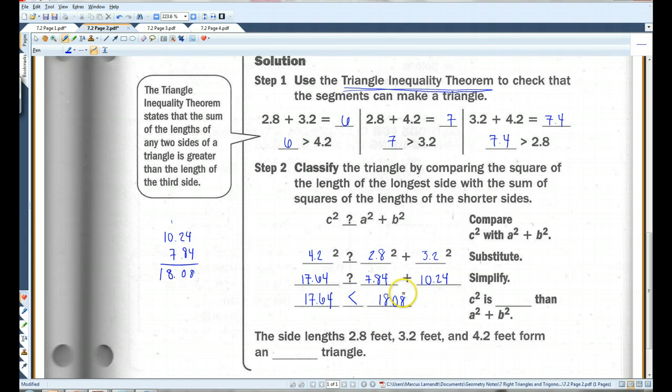I've got 17.64. And I've got 18.08. This is bigger. Okay. So, c squared is less than a squared plus b squared. The sides form an acute triangle. All right. Okay. Let's go on to page 3.